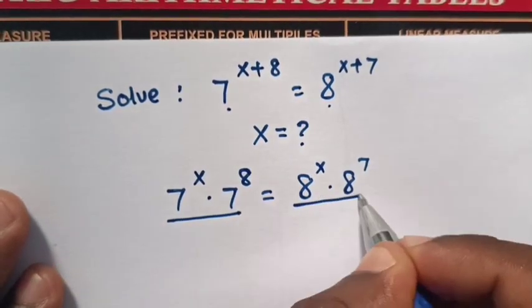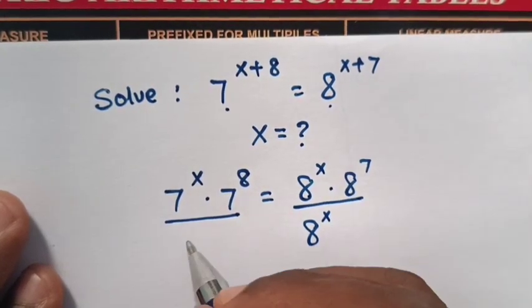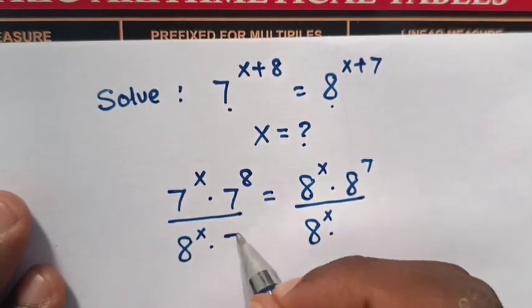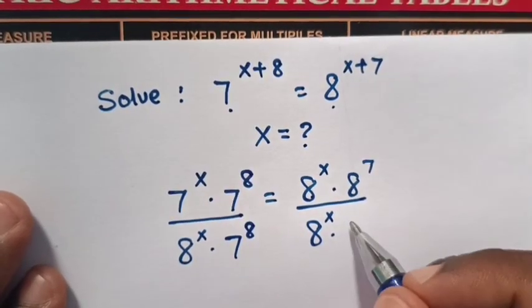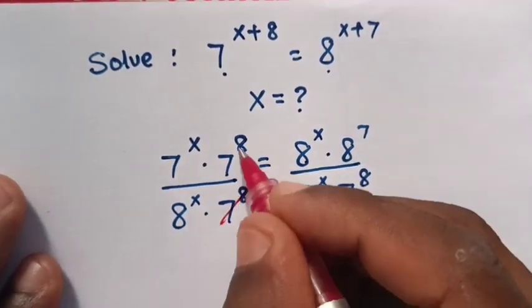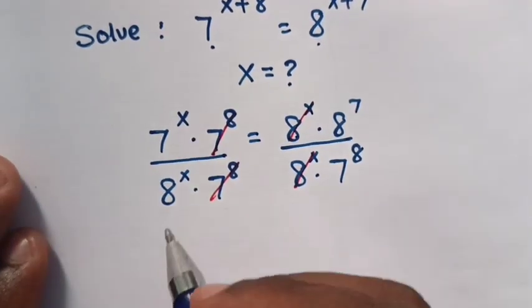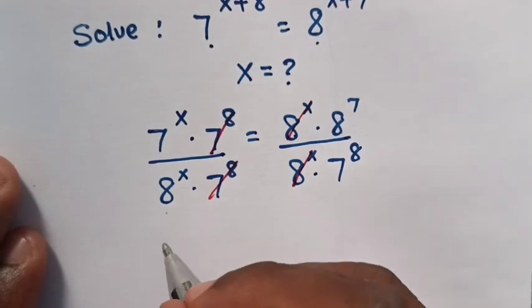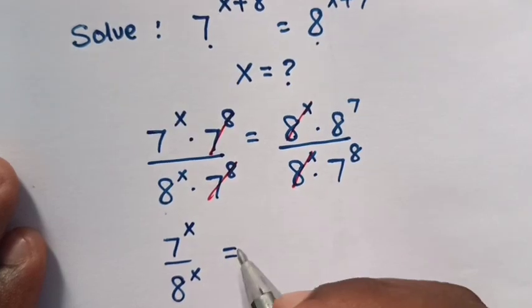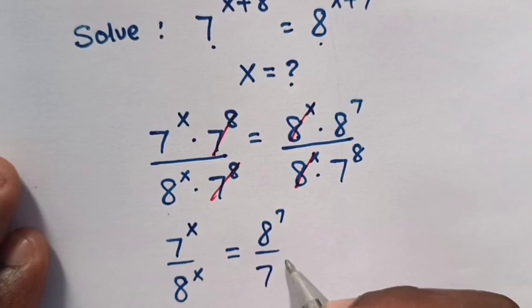We divide both sides first by 8 power x, and then divide by 7 power 8 in both sides. Then 7 power 8 will cancel with 7 power 8, and 8 power x will cancel with 8 power x. So our equation will be: 7 power x over 8 power x equals 8 power 7 over 7 power 8.